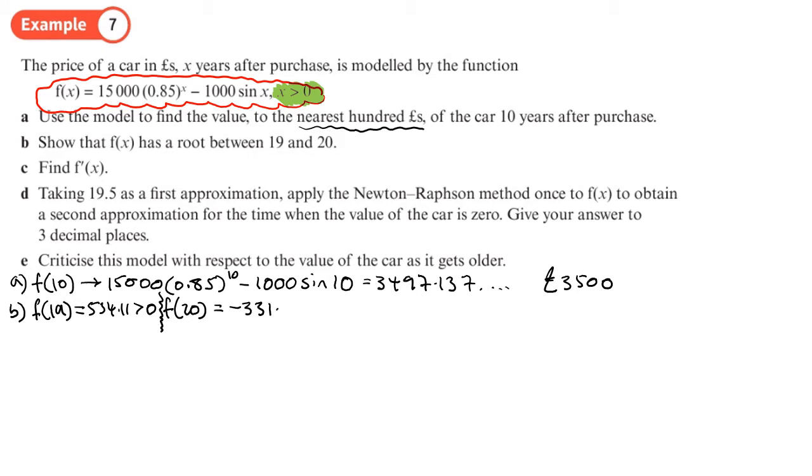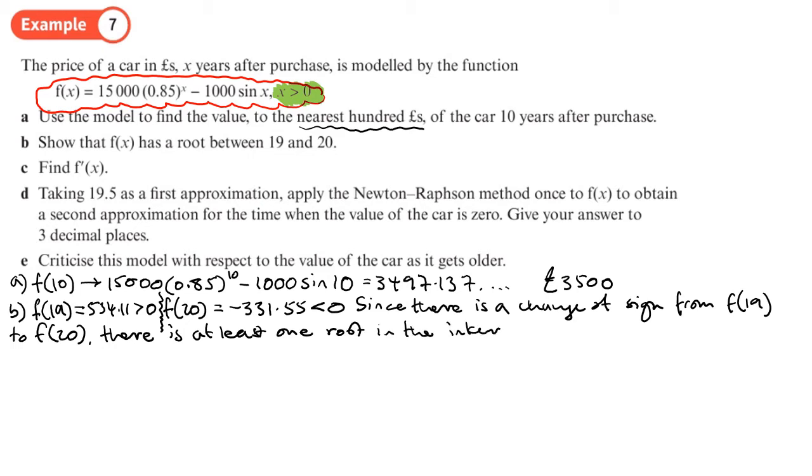So that means that since there is a change of sign from f of 19 to f of 20, there is at least one root in the interval 19 to 20.